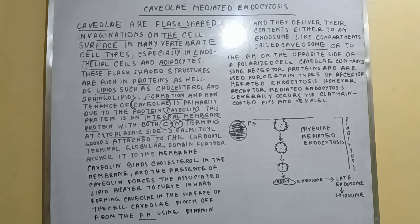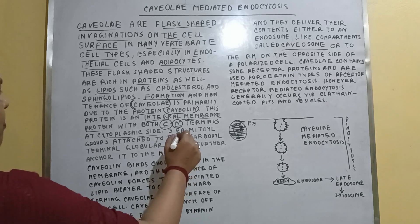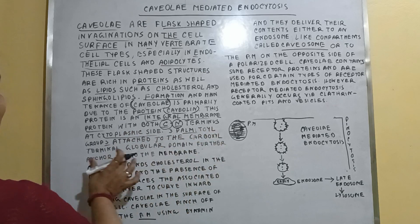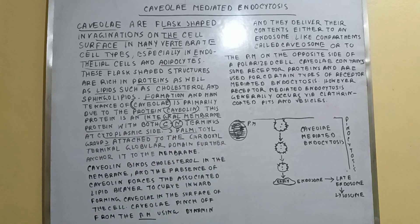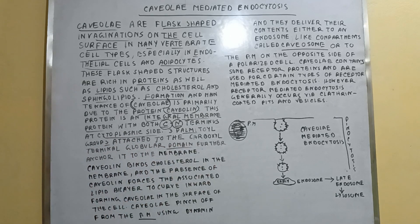Three palmitoyl groups are attached to the carboxyl terminal globular domain, and these further anchor caveolin to the membrane. Not only are the C and N terminals present, but also three palmitoyl groups attached to the carboxyl terminal globular domain.